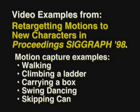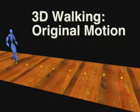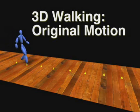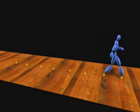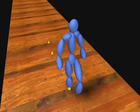This video demonstrates how we can retarget motion to new characters. Most motion for animation, such as this motion capture data, only applies to a particular character.